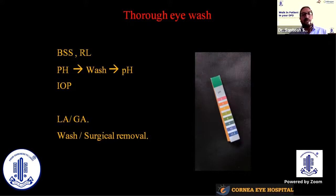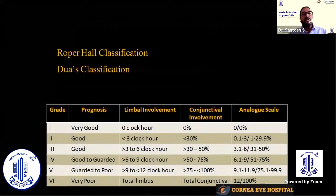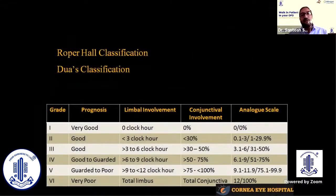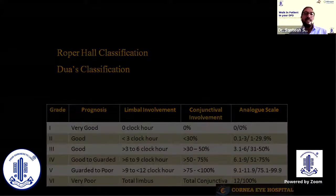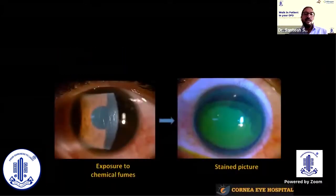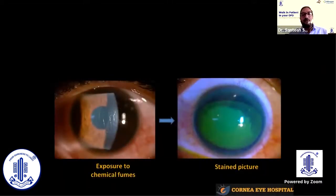The wash is usually done under local anesthesia, but in the case of children or when the chemical is deeper into the fornices, we can take the patient for general anesthesia. I won't go into the detail of classification, but we generally follow Dua's classification, which is widely accepted. I'll show a few pictures to help understand the classification.